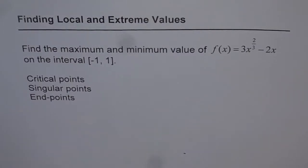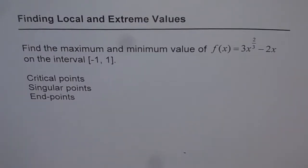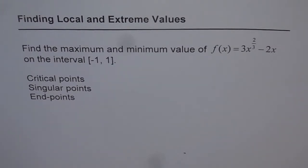Finding local and extreme values. The question here is: find the maximum and minimum value of f(x) = 3x^(2/3) - 2x on the interval [-1, 1].